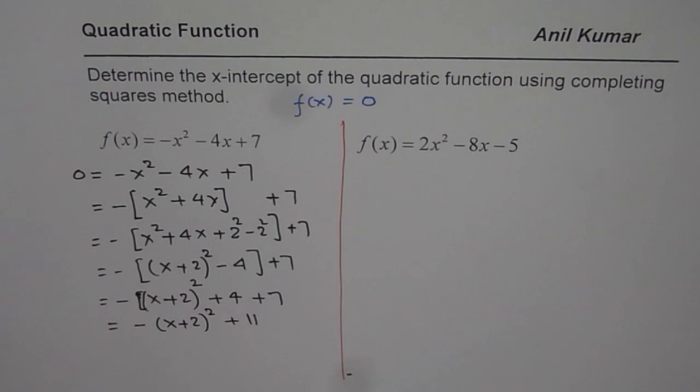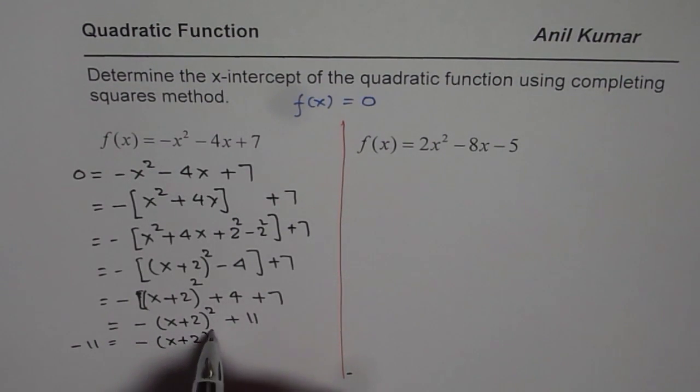Now, to find the x-intercept, we have to solve for x. So, we will take 11 on the left side. So, that is completing the squares. Once you get completing the squares, then you have to find the value of x. Now, let us take 11 to the other side. So, we get -11 = -(x + 2)².